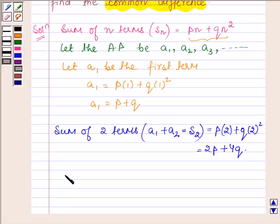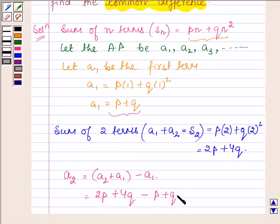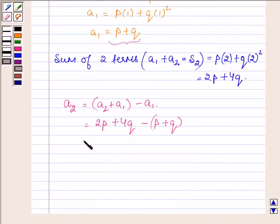Now we will find the second term A2, which can be written as A1 plus A2 minus A1. A1 plus A2 is the sum of the first two terms, which is 2P plus 4Q, minus A1. A1 is P plus Q. Further simplifying: 2P plus 4Q minus P minus Q equals P plus 3Q.